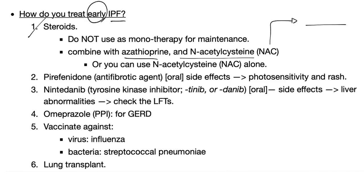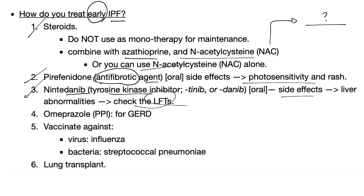N-acetylcysteine is also used in other conditions — let me know in the comments. There is a drug called pirfenidone, an anti-fibrotic agent. It prevents fibrosis; it does not treat existing fibrosis. Side effects: photosensitivity and rash. There is another drug called nintedanib — it ends in -tinib, so it's a tyrosine kinase inhibitor. Side effects: liver problems, so check the LFTs.